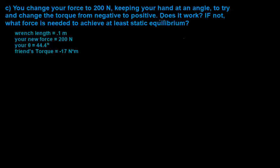So first of all, we're going to see if changing our force to 200 newtons changes the net torque to be positive again. So we are given our friend's torque from part B, and the angle that we had, our new force, and of course, the wrench length again.